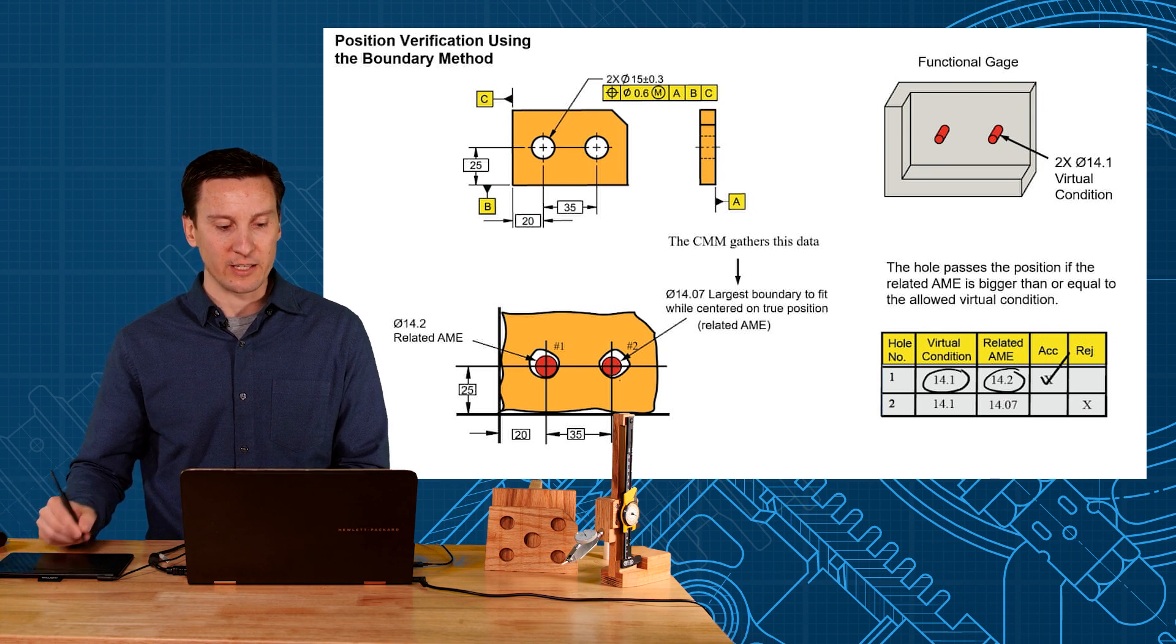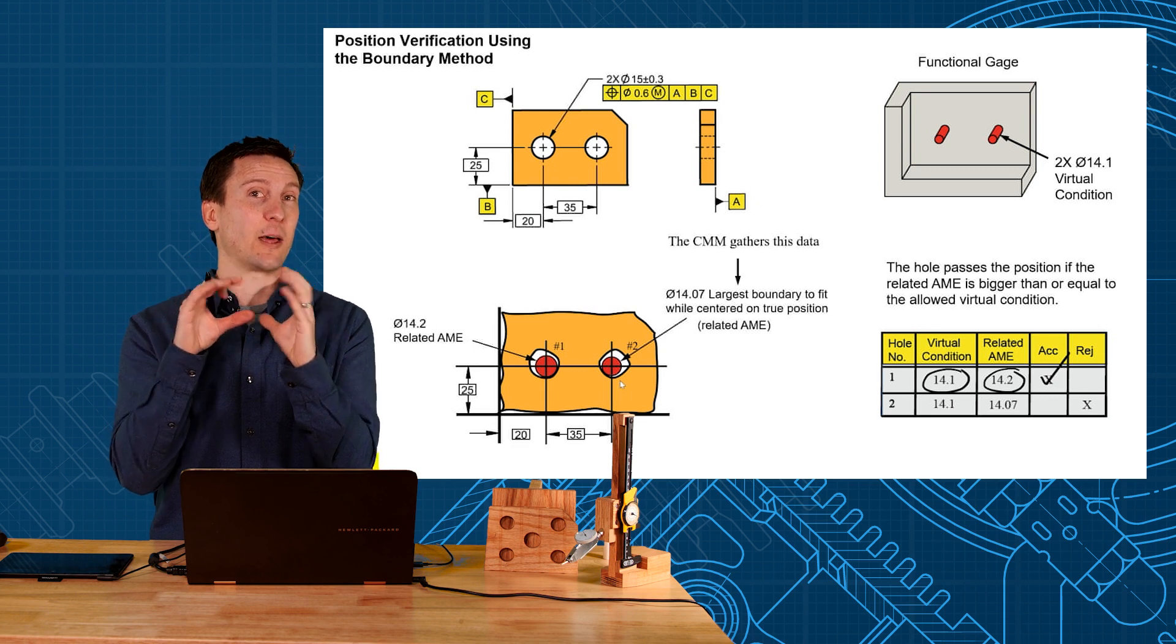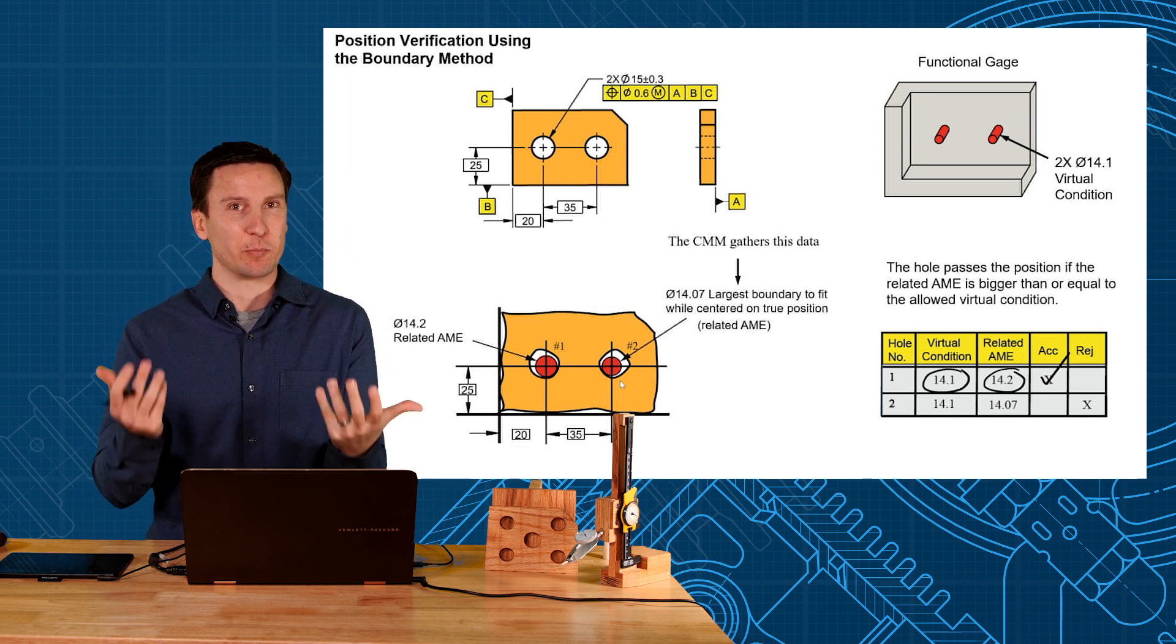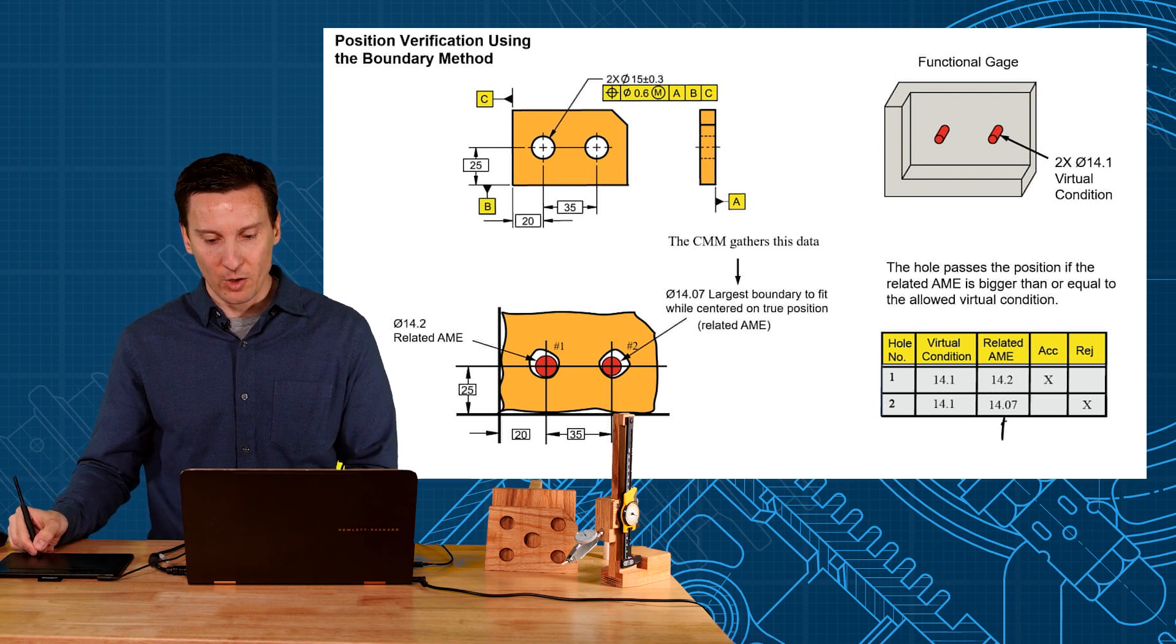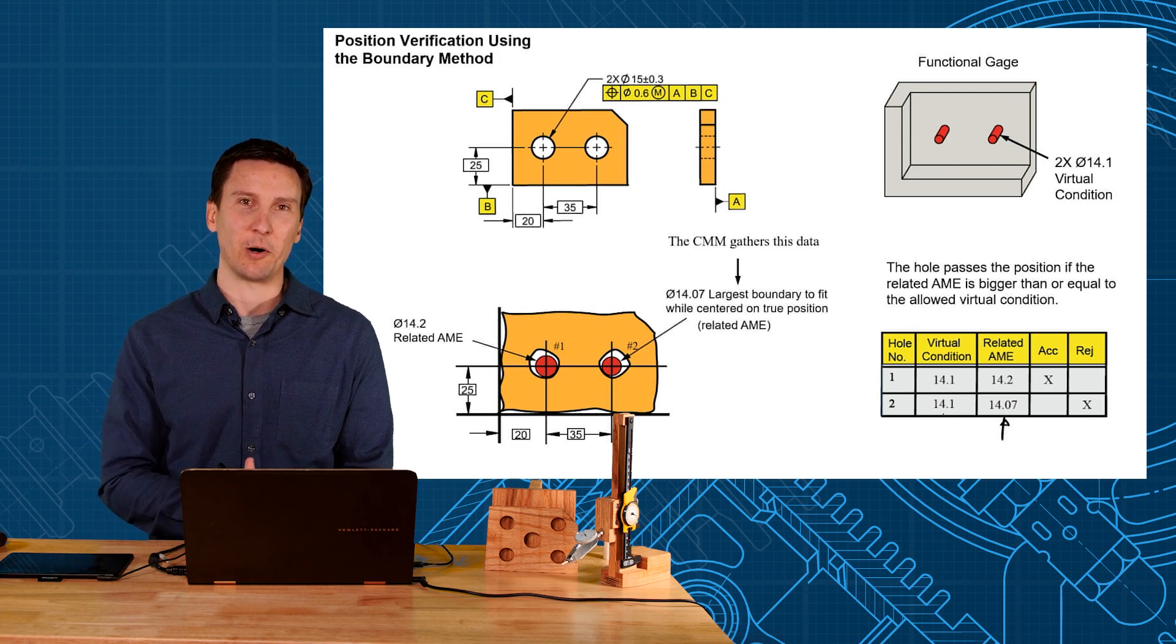Now in our second example, we couldn't expand the gauge pin big enough, and so that means the hole is shifted too much out of where it's supposed to be, which means the position is bad. So in the second example, our related AME is less than our virtual condition, so we'd reject that part.